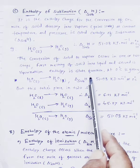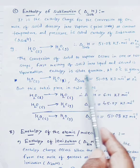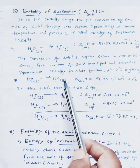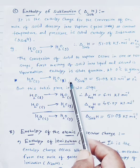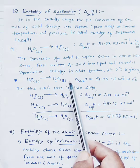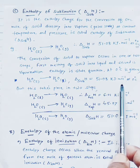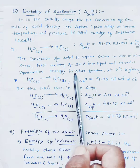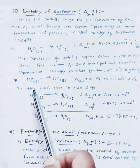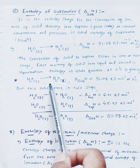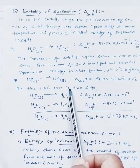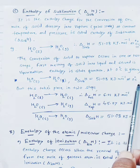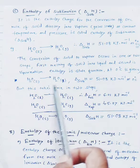The conversion of solid to vapor can occur in one or two steps. First, melting of solid into liquid; second, vaporization. Enthalpy is a state function, meaning it depends only on the initial and final states. So at 0 degrees Celsius, sublimation gives delta H of 51.08 kJ per mole, whether it occurs directly or via two steps.